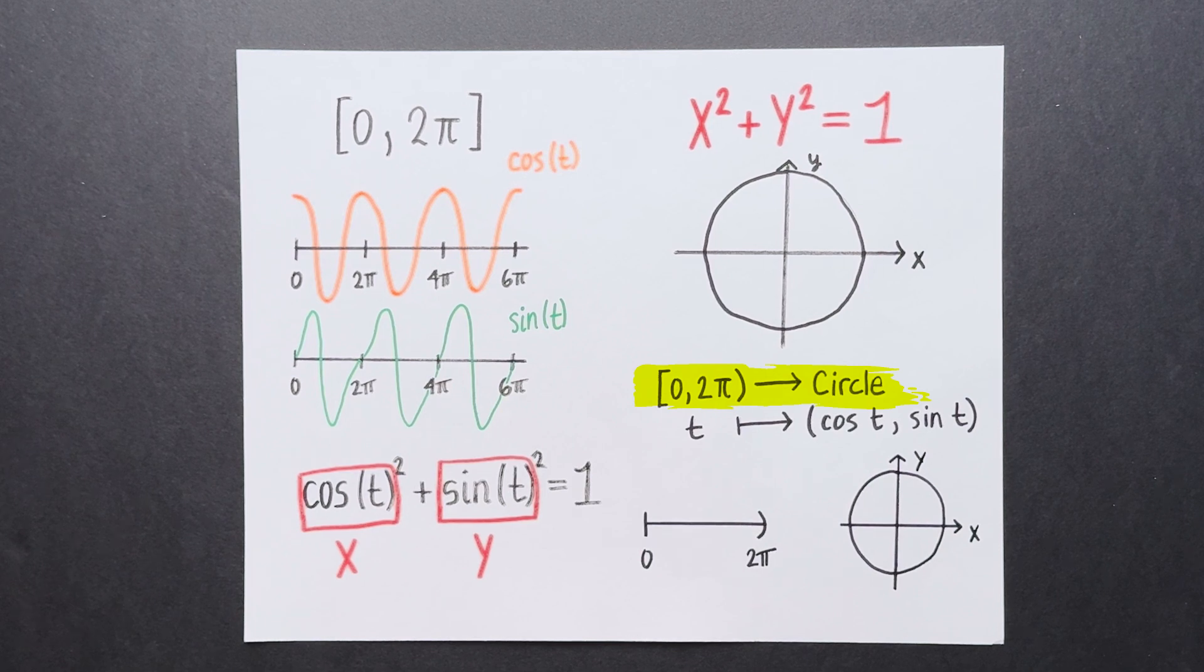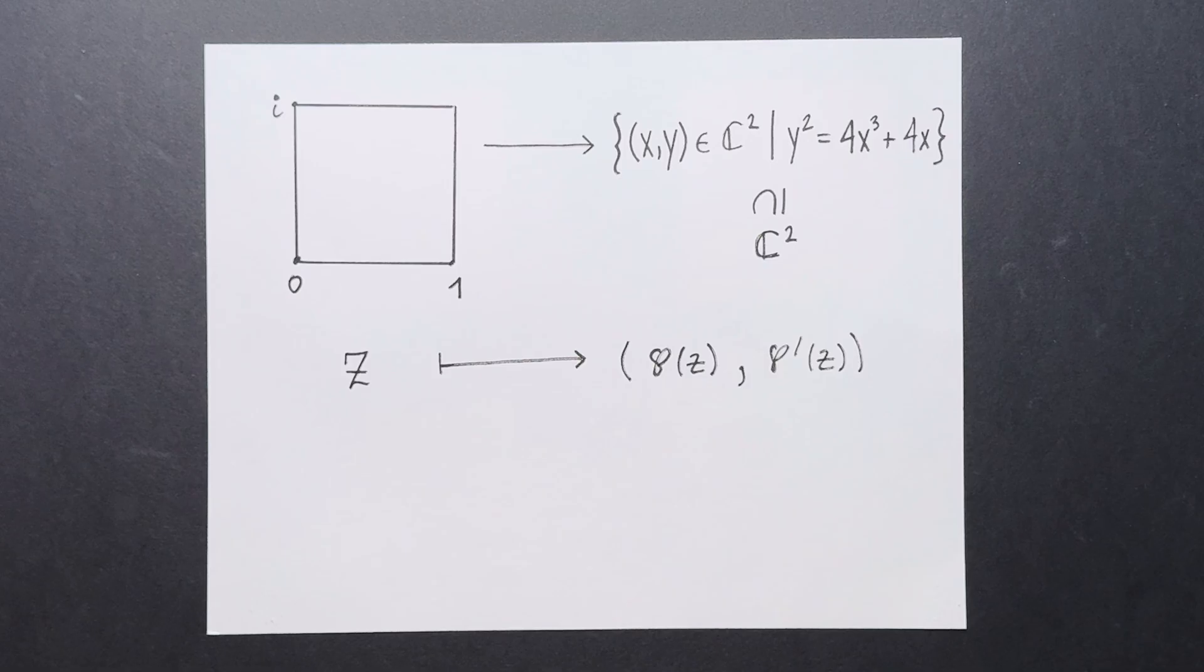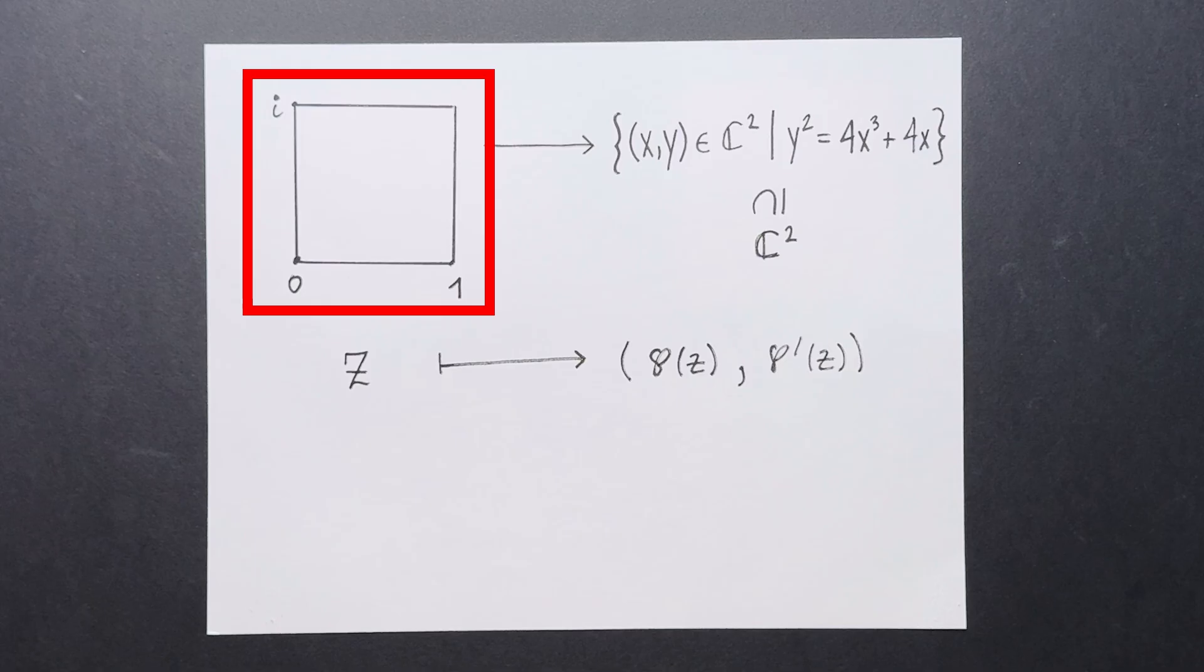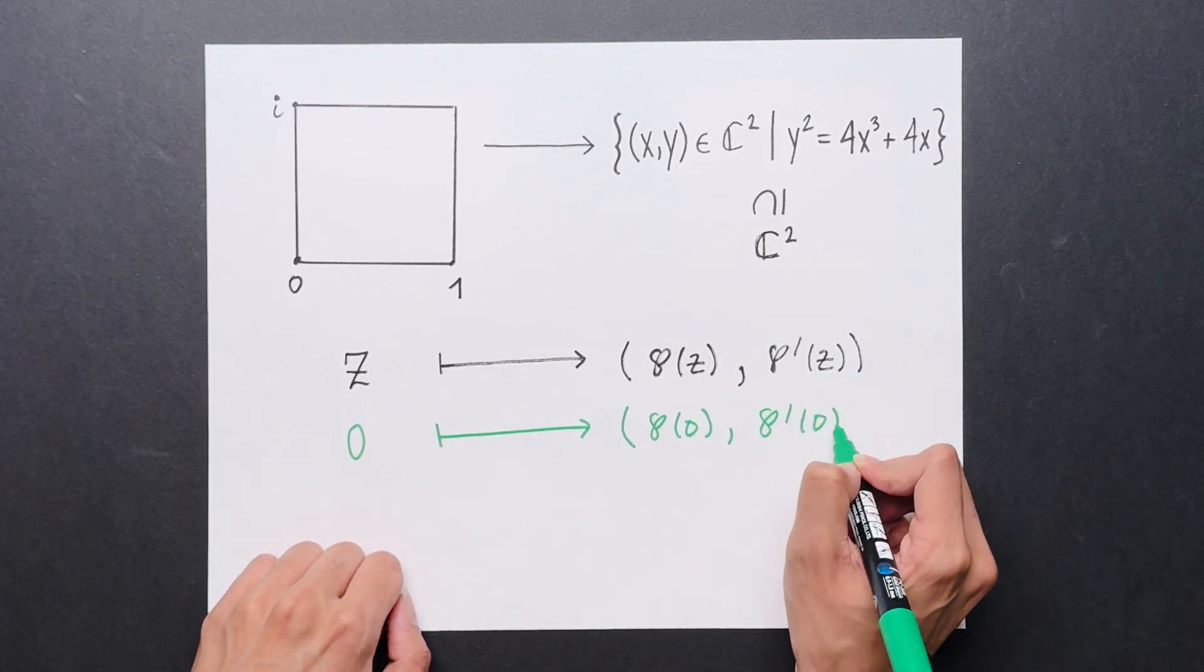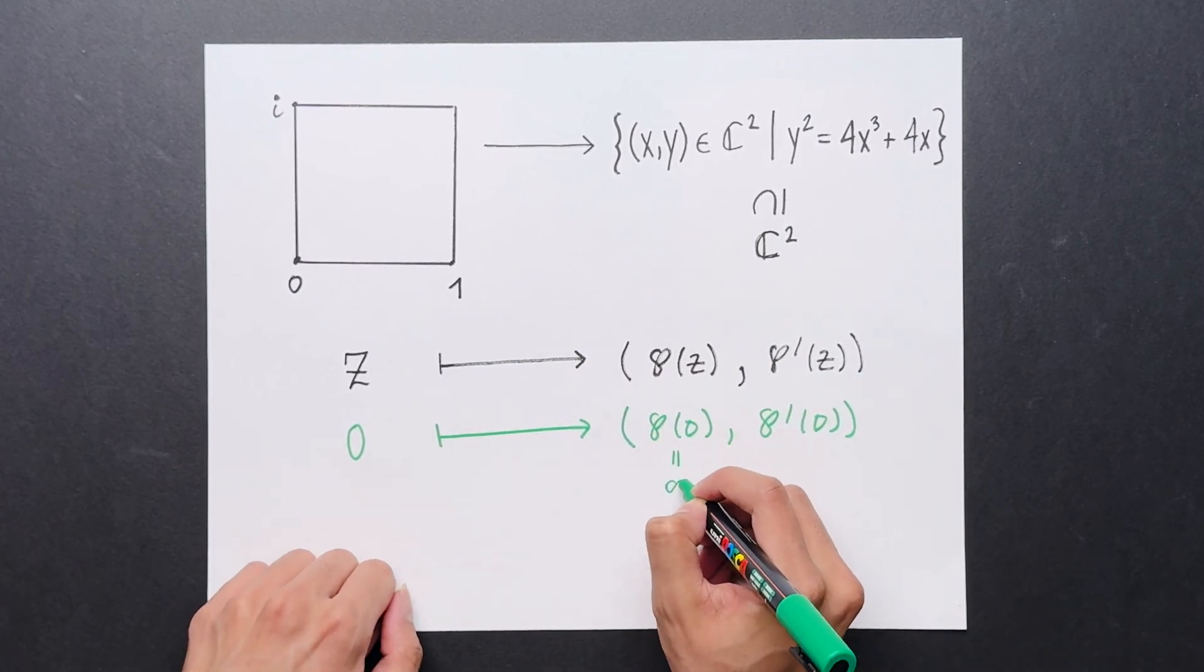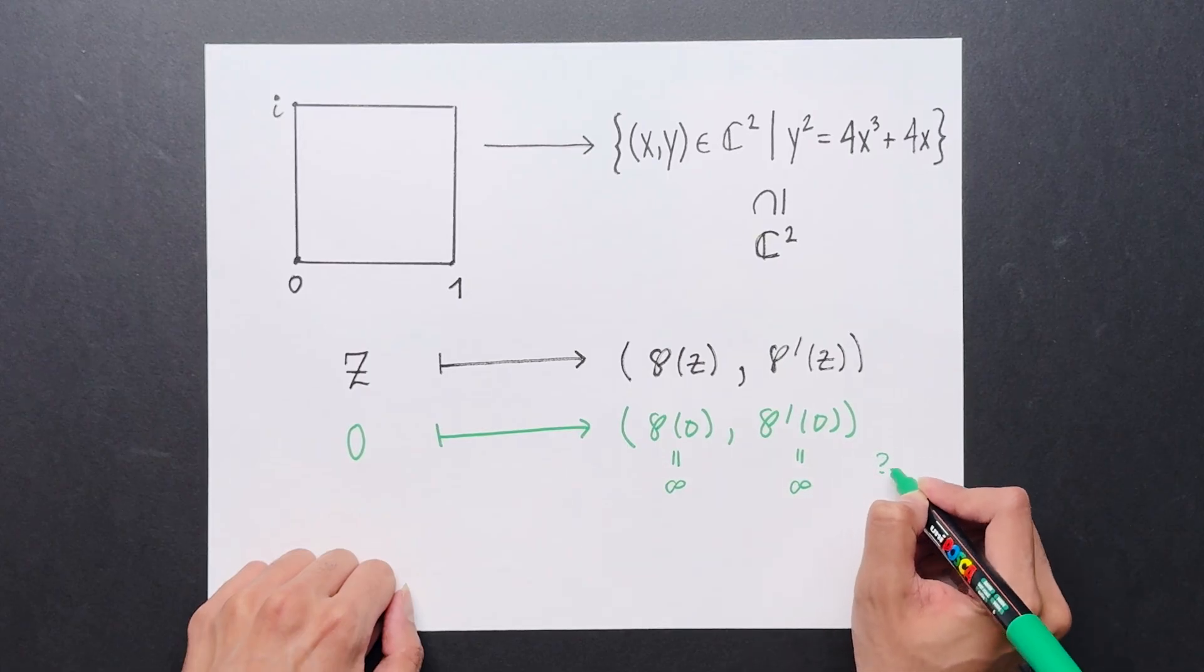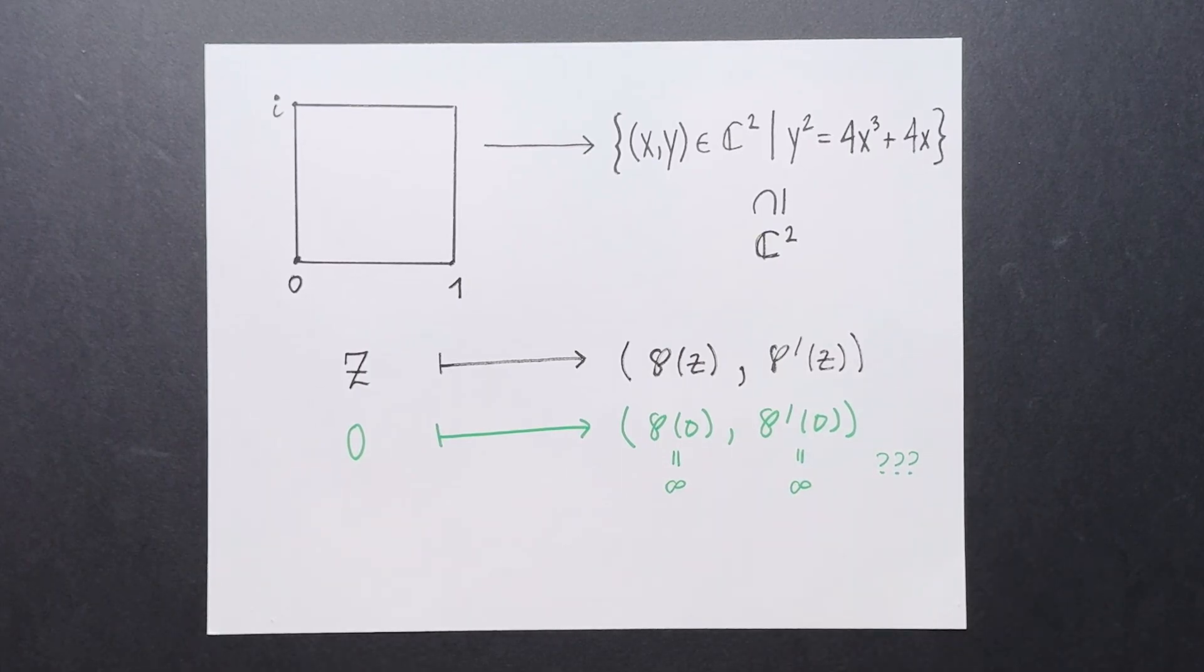There is a bijection between the interval and the circle. Is there a bijection between this square and this graph? Not quite. And that's because if you take the value 0, it gets mapped to p of 0 comma p prime of 0. And both of these functions have poles at 0, so you don't really get two complex numbers. To get around this, we have to adjoin an extra point to the curve, called the point at infinity. And the point 0 on the square gets mapped to this. Now, making this precise is a little bit hairy.